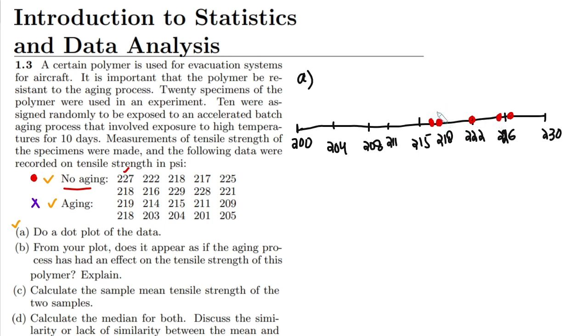The other one is 218 again, so let me draw it here. The next one is 216, so 216 almost lies here. Then 229, so 229 lies here. Then 228, 228 lies here, and the last one here is 221, which lies here.